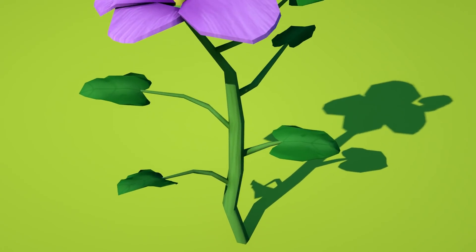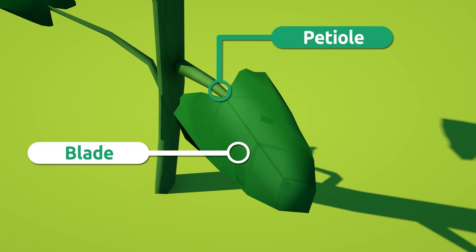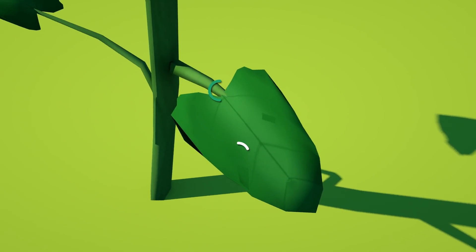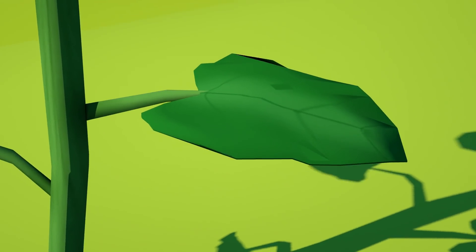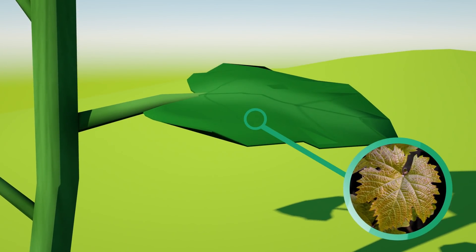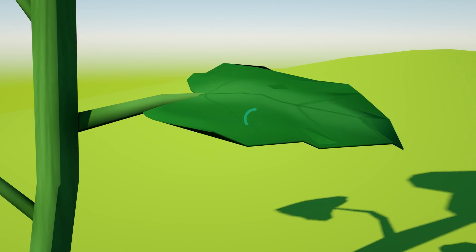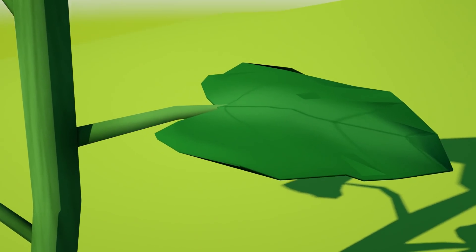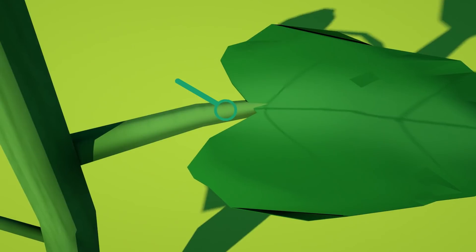Leaves are made up of two parts. The petiole and the blade. The blade is the flat part of the leaf, which has many green food-making cells. The petiole attaches the leaf blade to the stem.